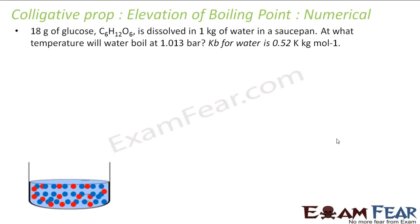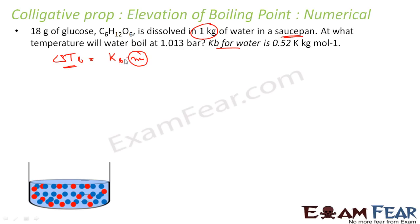A question: 18 grams of glucose is dissolved in 1 kg of water in an open container. When glucose is dissolved in water, we know that the boiling point will increase. The increase in boiling point is delta T_b = K_b × m. K_b is given; delta T is something to find. What about molality? Molality can be found because 18 grams of glucose is given, we can find moles, and the mass of water is given.